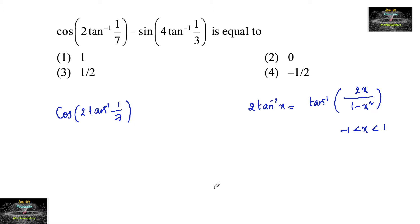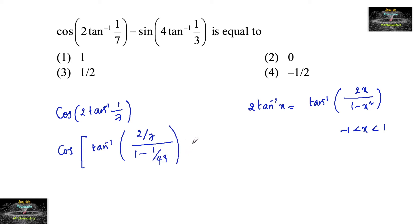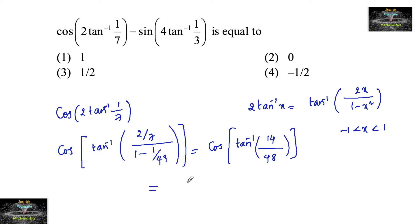Here, 1/7 lies between −1 and +1, which is less than 1. So we can write cos(tan⁻¹(2×(1/7) / (1−(1/7)²))), that is 1/49. The numerator becomes 14/49 and denominator 48/49, which equals cos(tan⁻¹(7/24)).